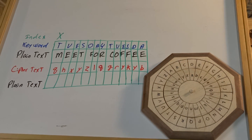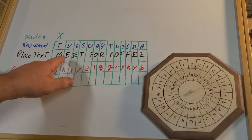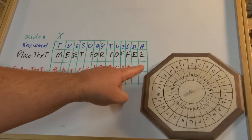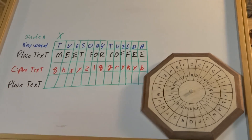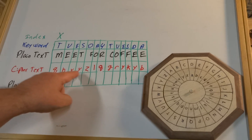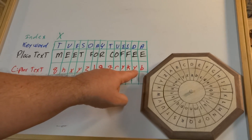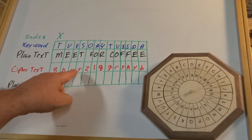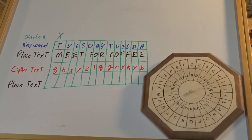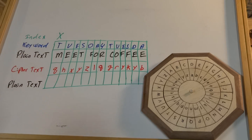The nice thing about doing this is you'll notice that the E's are always encoded as different letters. You can also see that we have Y a couple of times in our cipher text, but it means different letters. So this is what makes this code so hard to crack. Now if we want to decode it, we just need to know our index and our keyword.